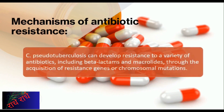Corynebacterium pseudotuberculosis has gained attention for its capability of attaining resistance to certain commonly used antibiotics. This resistance is developed through the acquisition of resistance genes and/or chromosomal mutations. Comprehending the ways antibiotic resistance is created is pivotal in order to counteract this hazard.